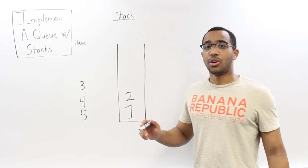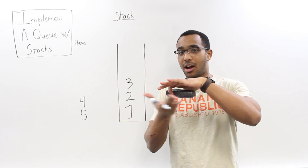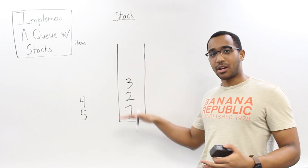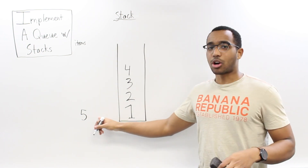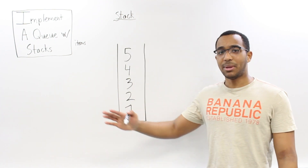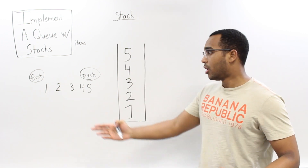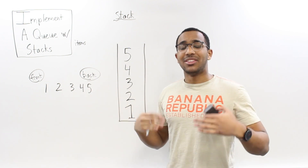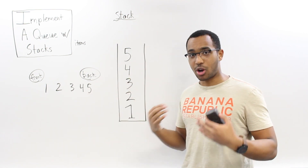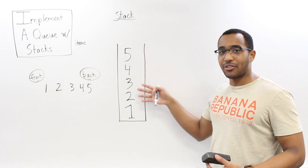The caller just sees a queue - we add one, two, three, four, five via enqueue calls, and for all they know we're using a normal array underneath. So this is what's happening under the hood. If this were a normal queue without the stack complexity, one would be at the front of the queue and five at the back. That's what our caller expects.